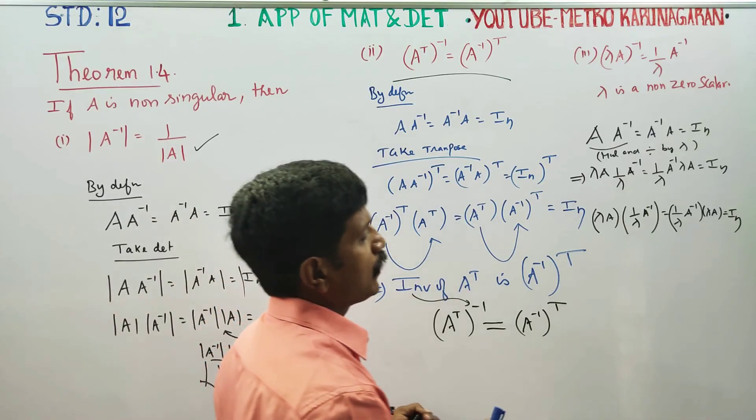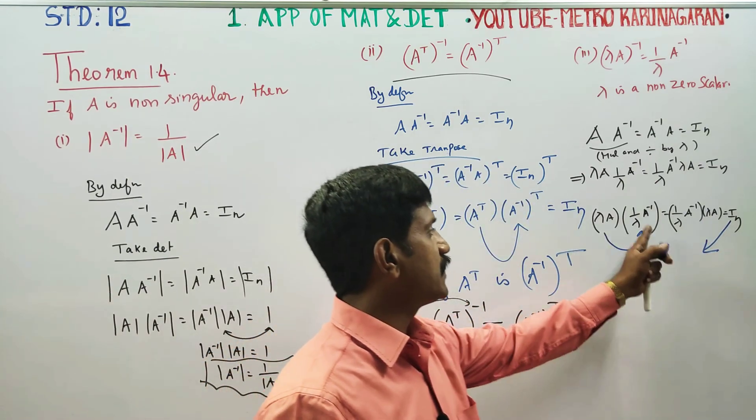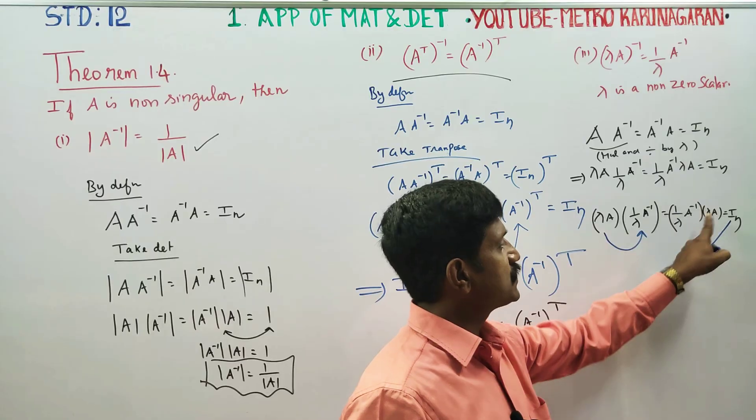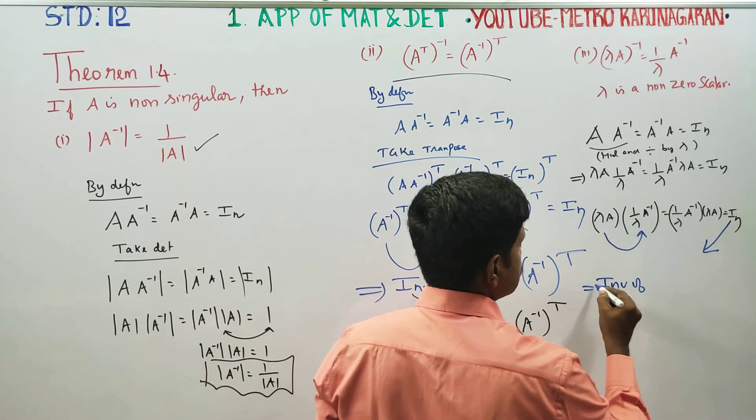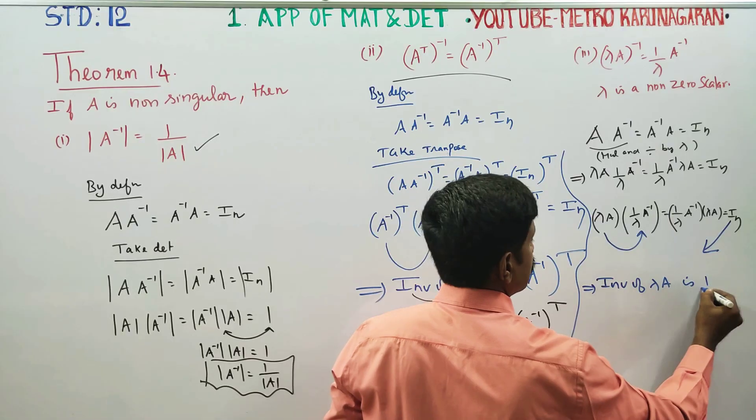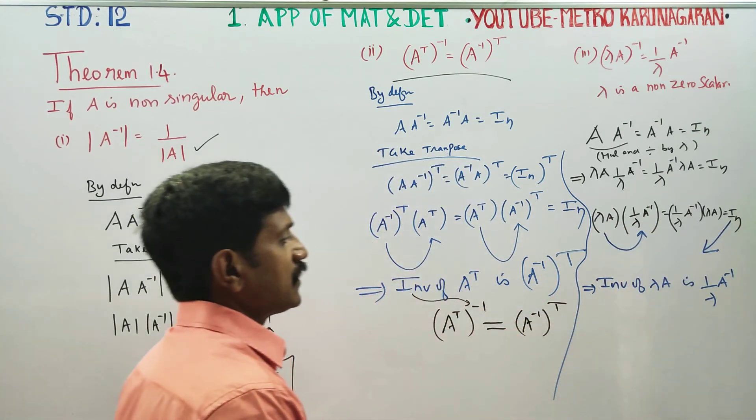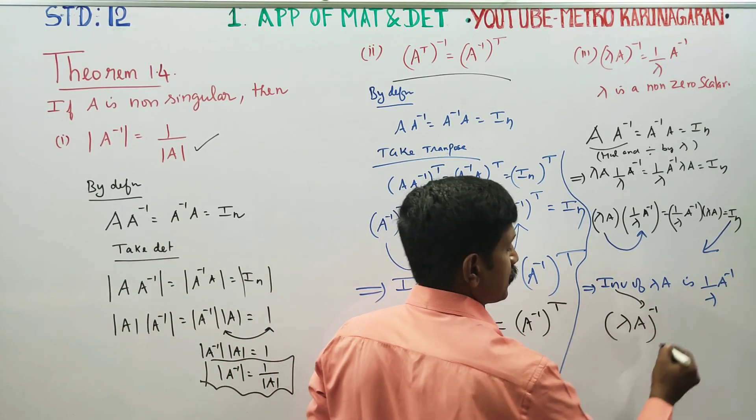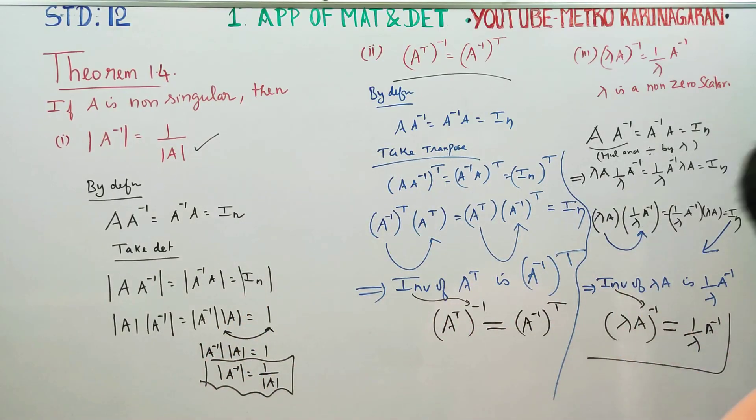We can show that inverse of lambda A is 1 by lambda times A inverse. Inverse of lambda A equals 1 by lambda A inverse. This ends the proof of third subdivision. Thank you.